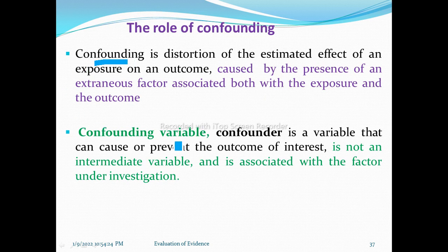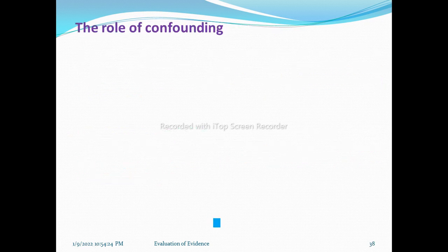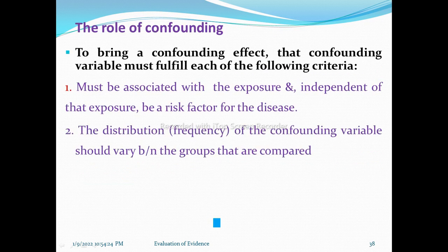A confounding variable is not an intermediate variable; it is associated with the factor under investigation. The confounder is a variable that can cause or prevent the outcome of interest. Criteria: one — they can cause or prevent the outcome of interest; two — they are associated with the factor under investigation; three — they are not an intermediate variable.